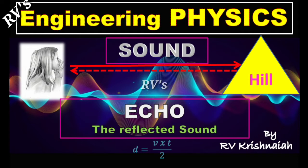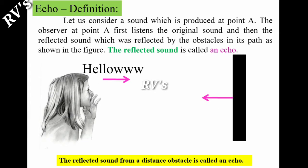Echo is the reflected sound. When one sound is generated, it reflects back after hitting an obstacle. That reflected sound is called echo. For example, let us consider a sound which is produced at point A.